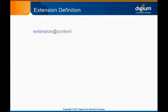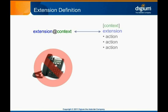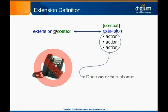Extensions live in context, and together, extension and context define the dial plan address that Asterisk needs in order to route calls. Extensions in Asterisk aren't quite the same as extensions in traditional PBX systems, in that they don't represent a physical port or phone on the PBX. In Asterisk, an extension is just the mapping between a dial plan address and a named set of actions — things done on or to an Asterisk channel.